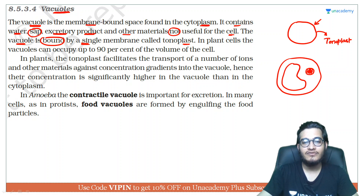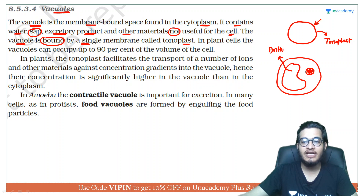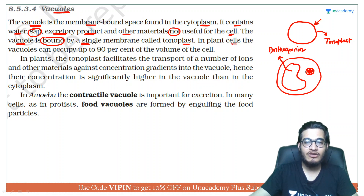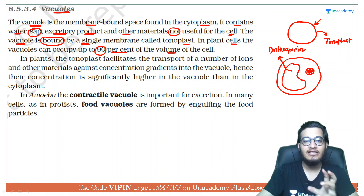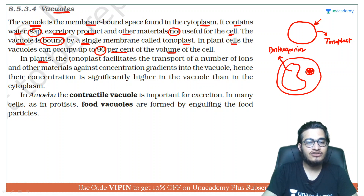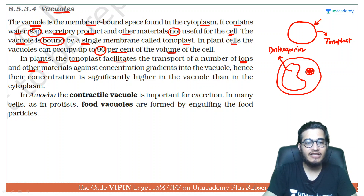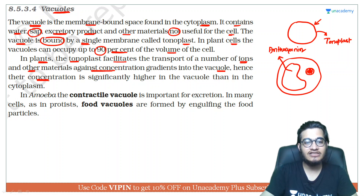In plant cells, the tonoplast of the vacuole facilitates the transport of a number of ions and other materials against the concentration gradient into the vacuole. Hence, their concentration is significantly higher in the vacuole than in the cytoplasm.